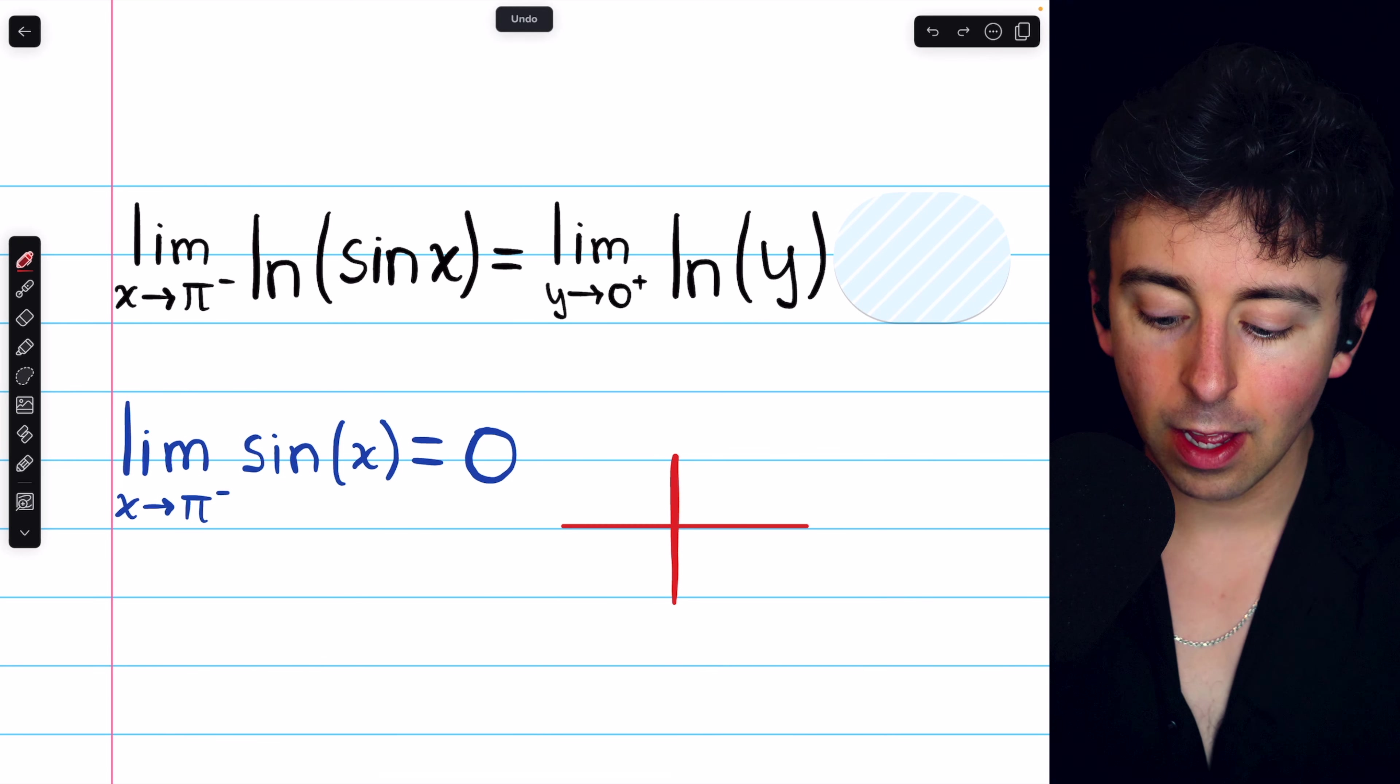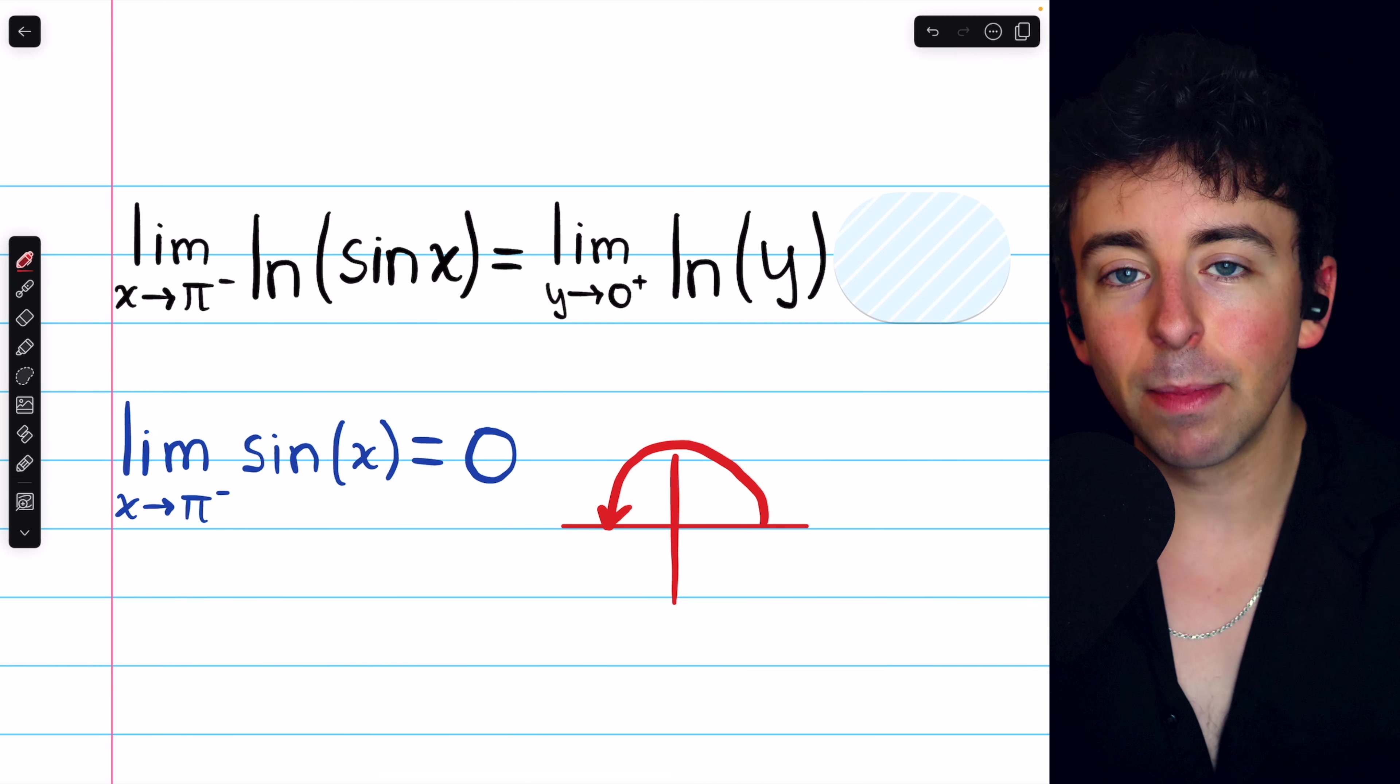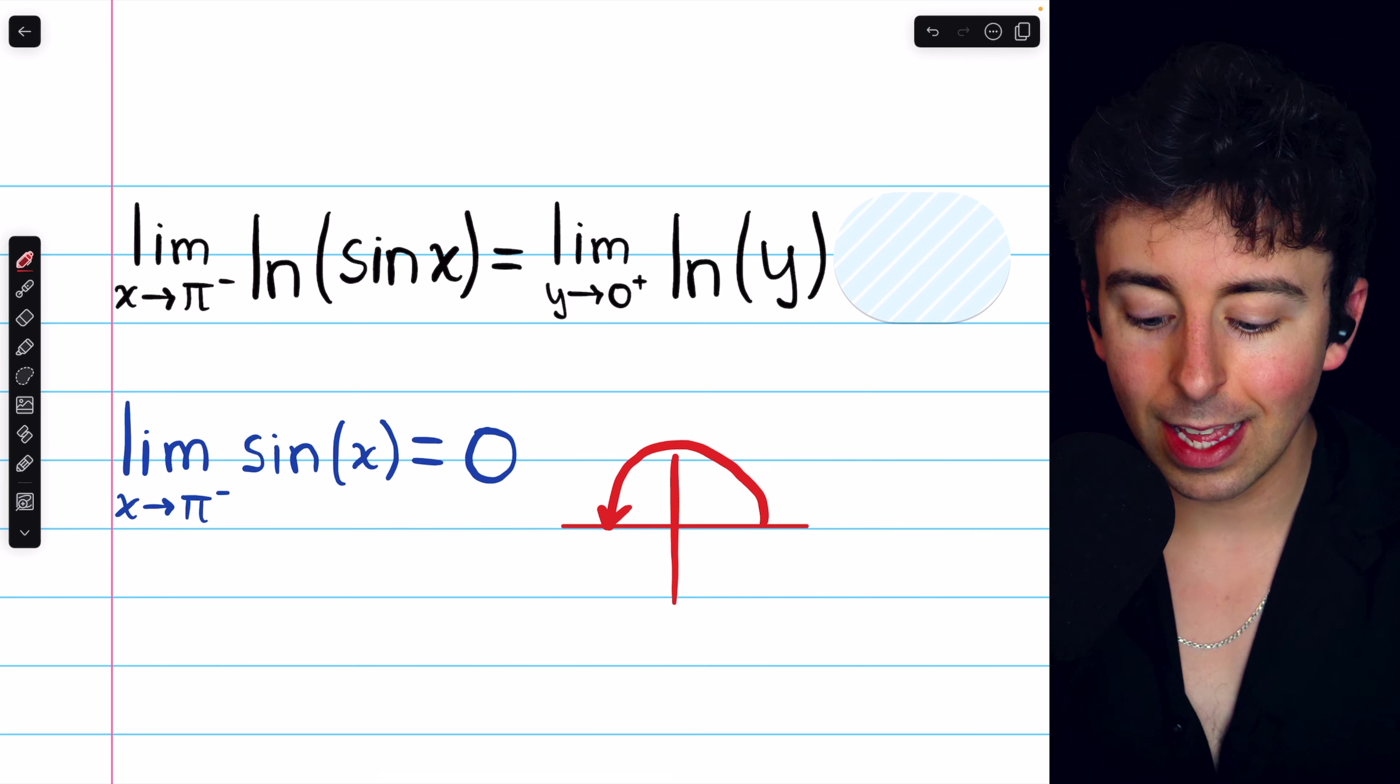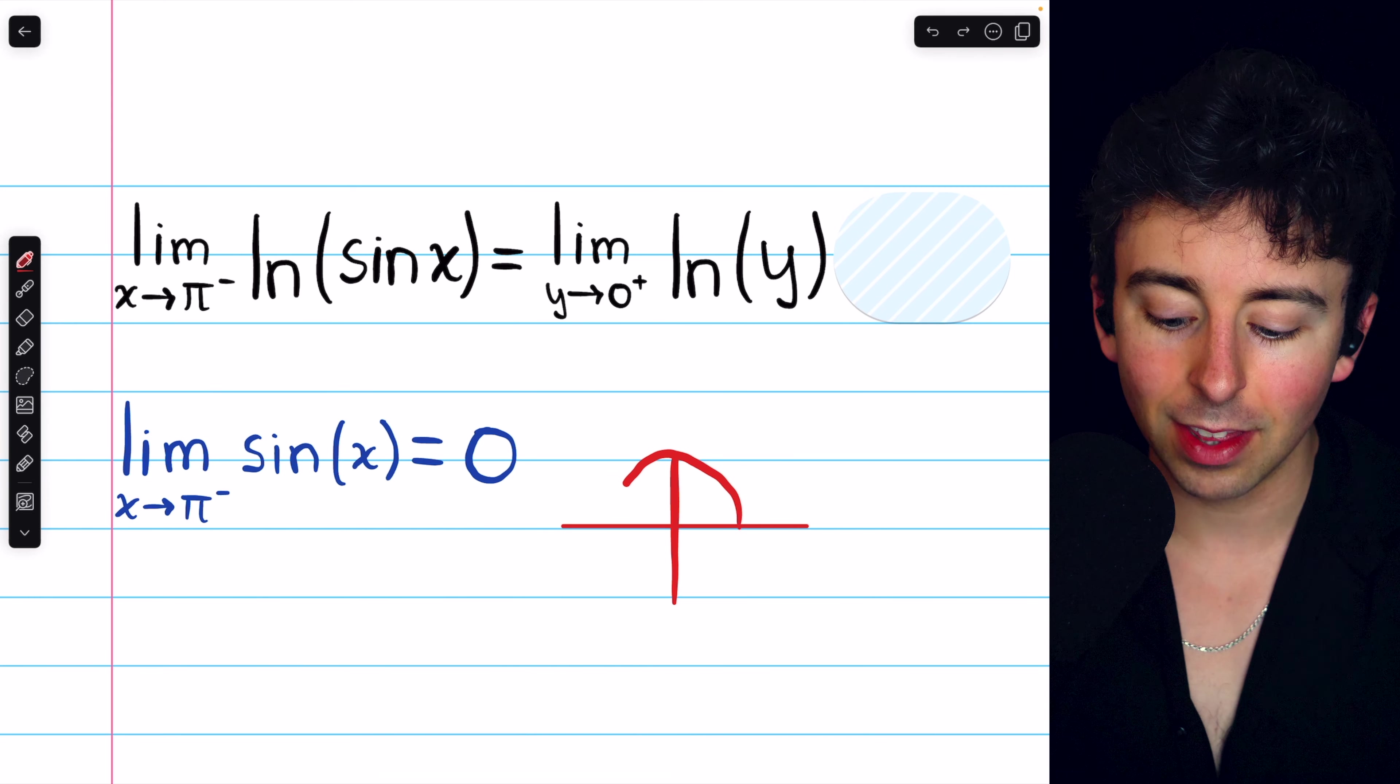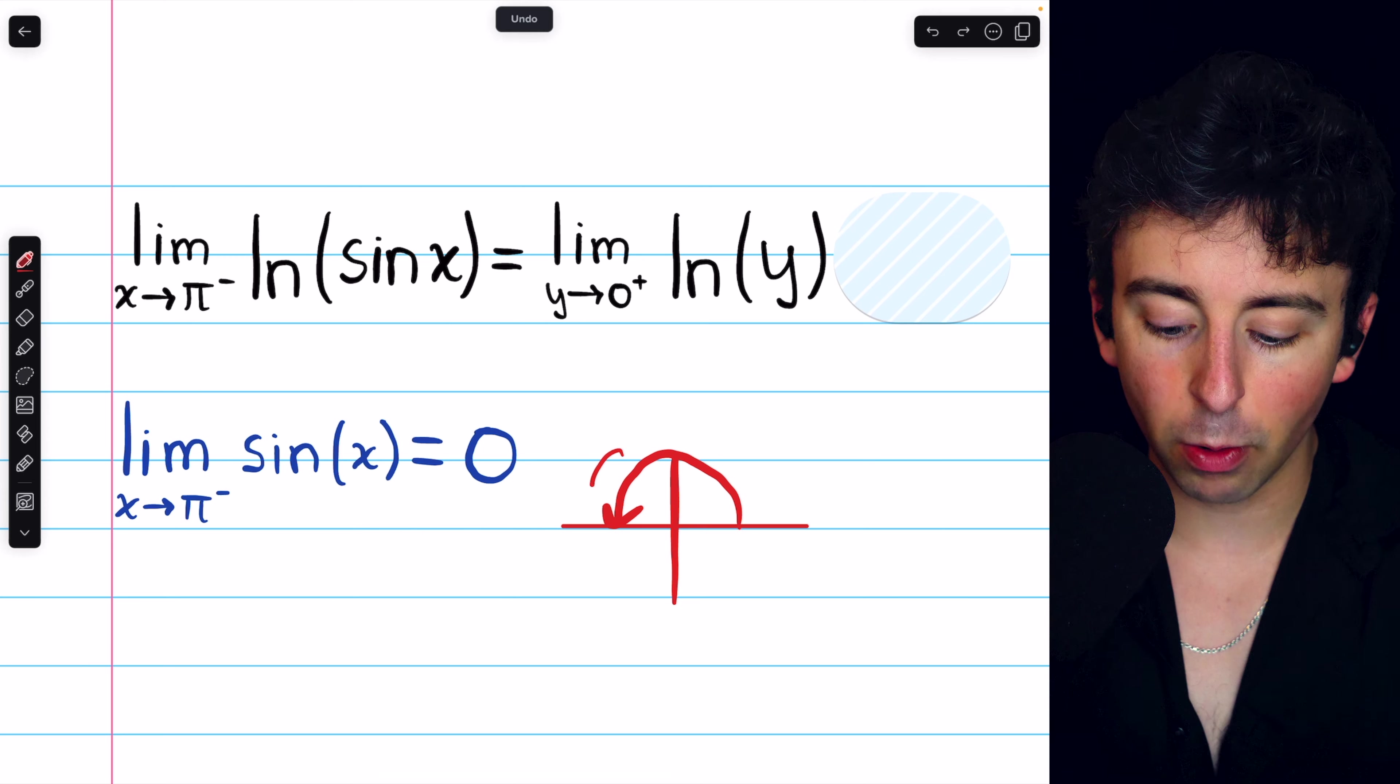This is because if you think about the unit circle and think about what it looks like when theta is approaching pi from the left, pi is over here, and from the left means that theta is less than pi, but it's approaching pi.